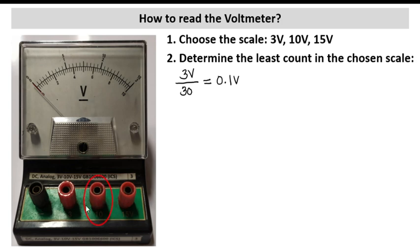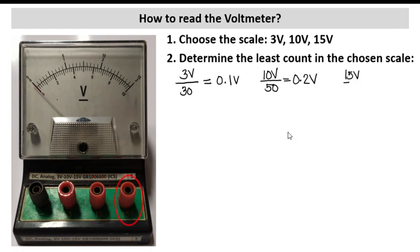If we choose the 10 volts scale, that would be 10 volts divided by 50, because there are 50 divisions in our meter display, which is equivalent to 0.2 volt. So 0.2 volt is the least count if we connect our circuit using the 10 volt scale. And if we choose the 15 volts scale, that would be 15 volts divided by 30 — there are 30 divisions in our voltmeter display — which is equivalent to 0.5 volts.